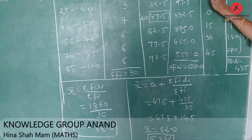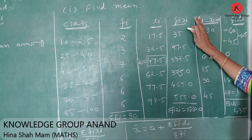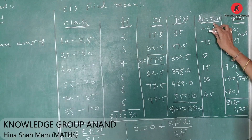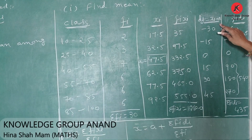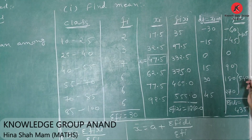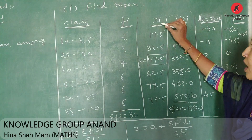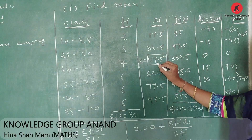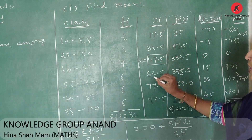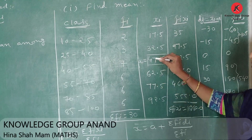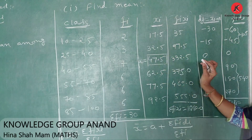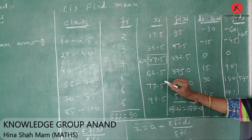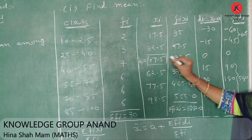Now our second method. We find di using the assumed mean method — here we do not use fi·xi directly. Di is equal to xi minus A. We choose A from among the xi values. Among the xi values, we choose a central number — 47.5 or 62.5. We take A equal to 47.5.